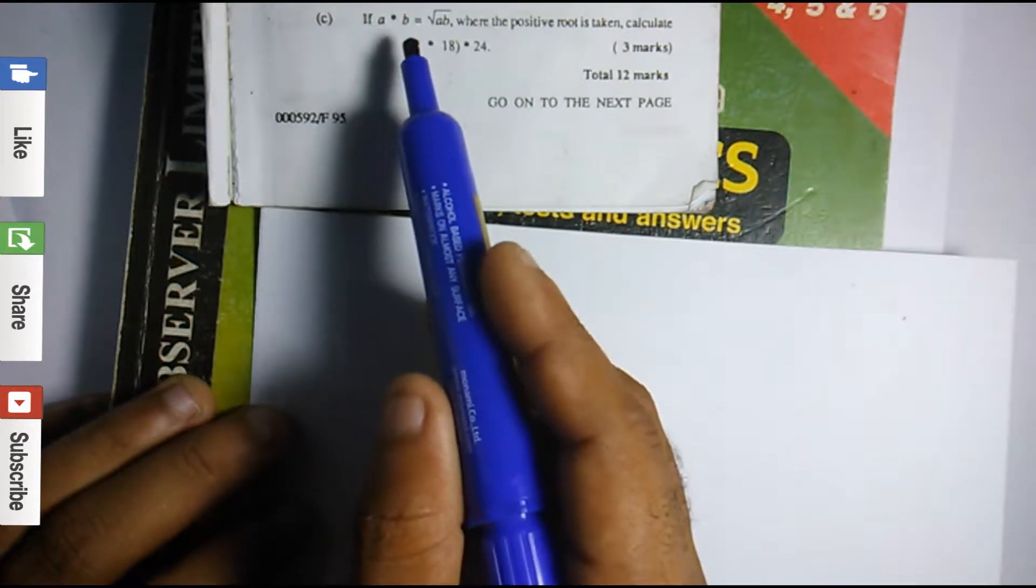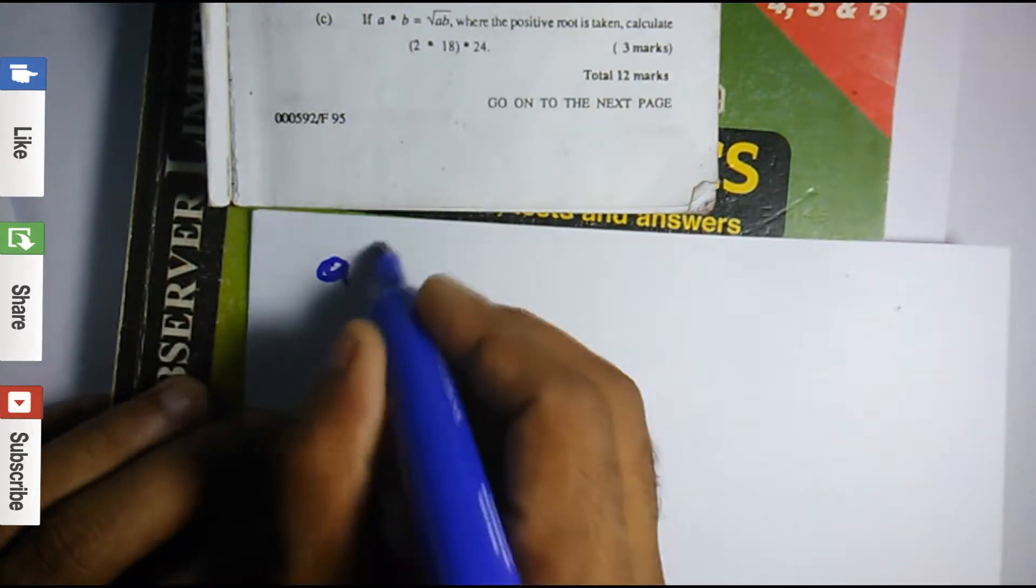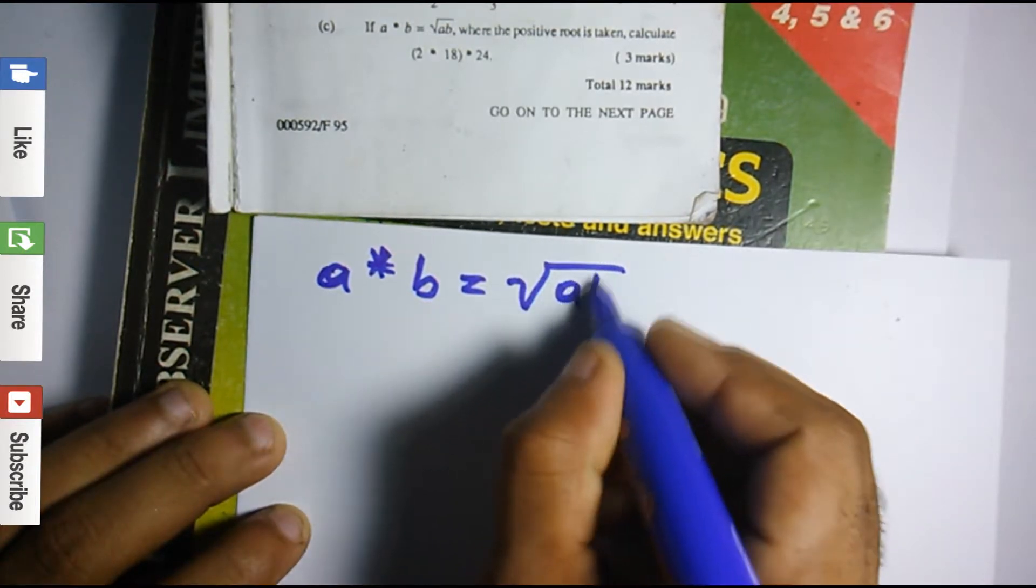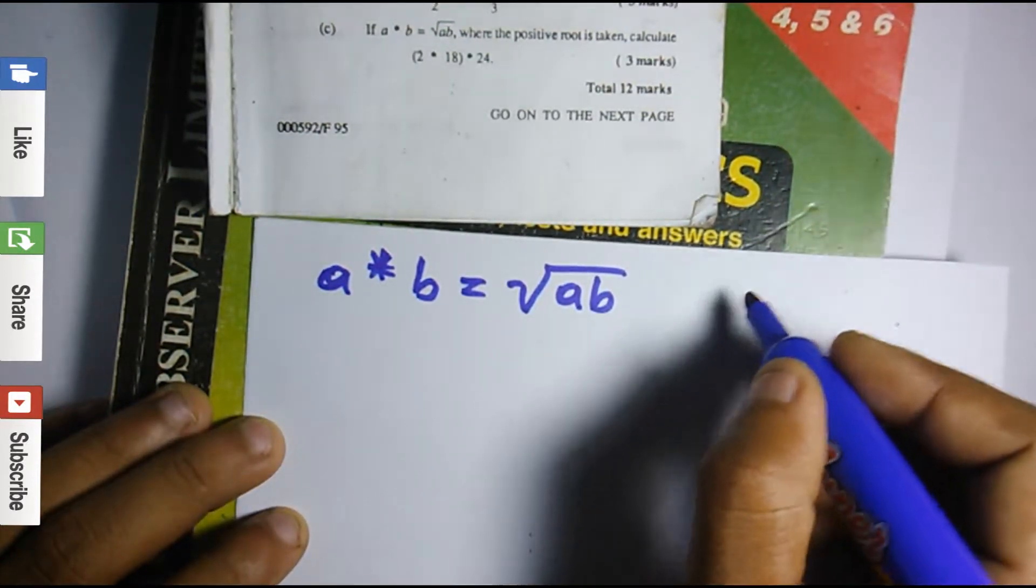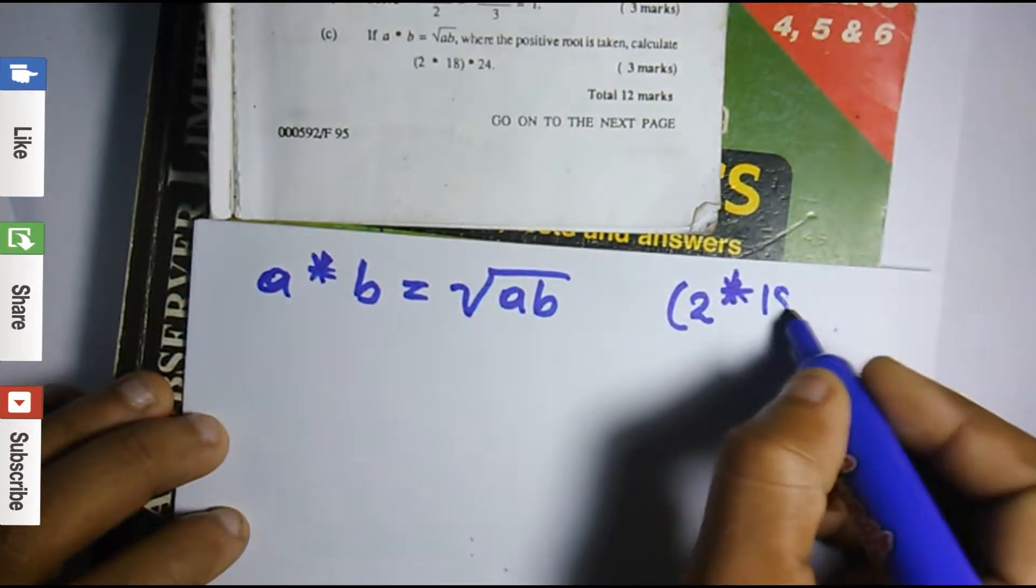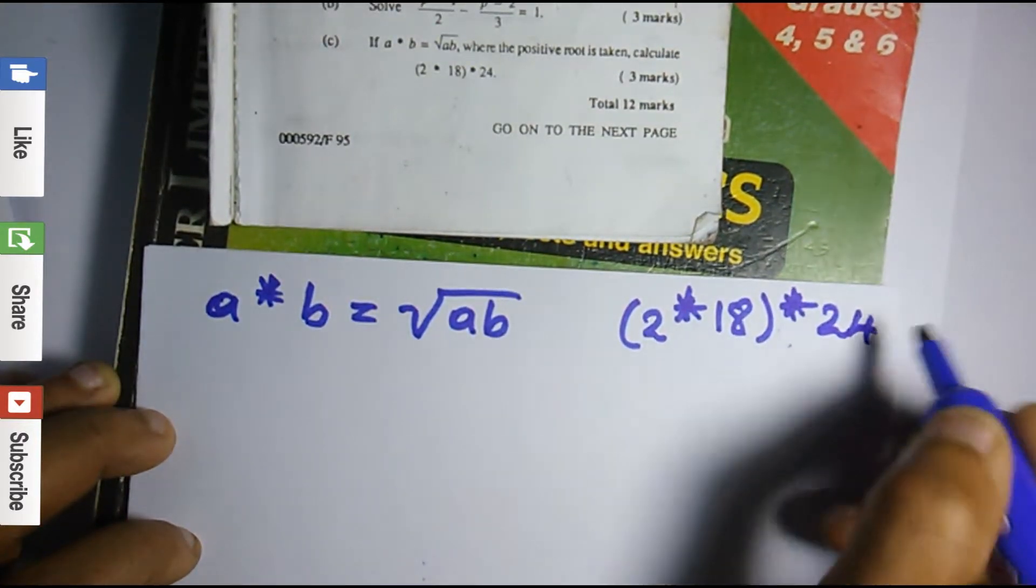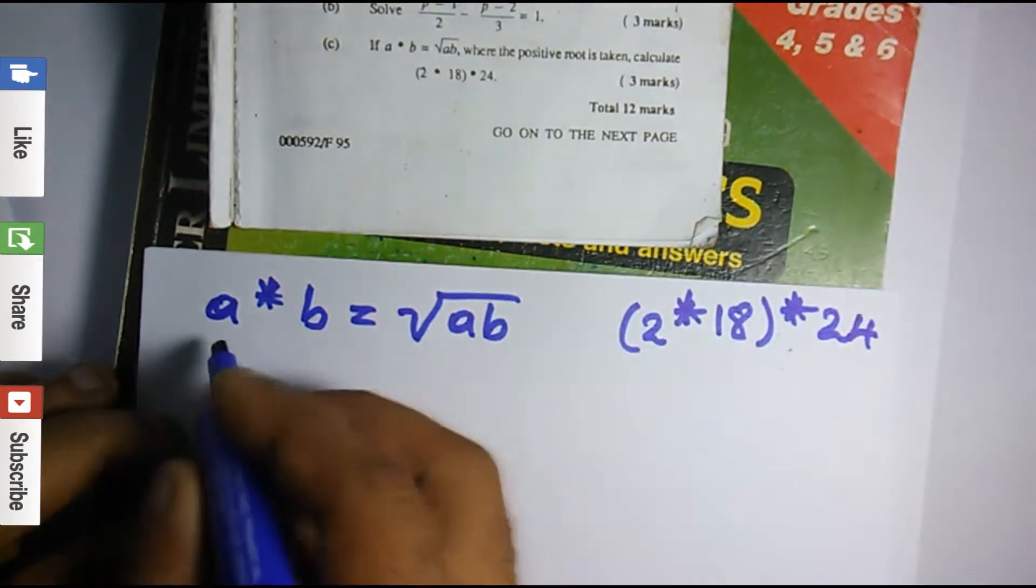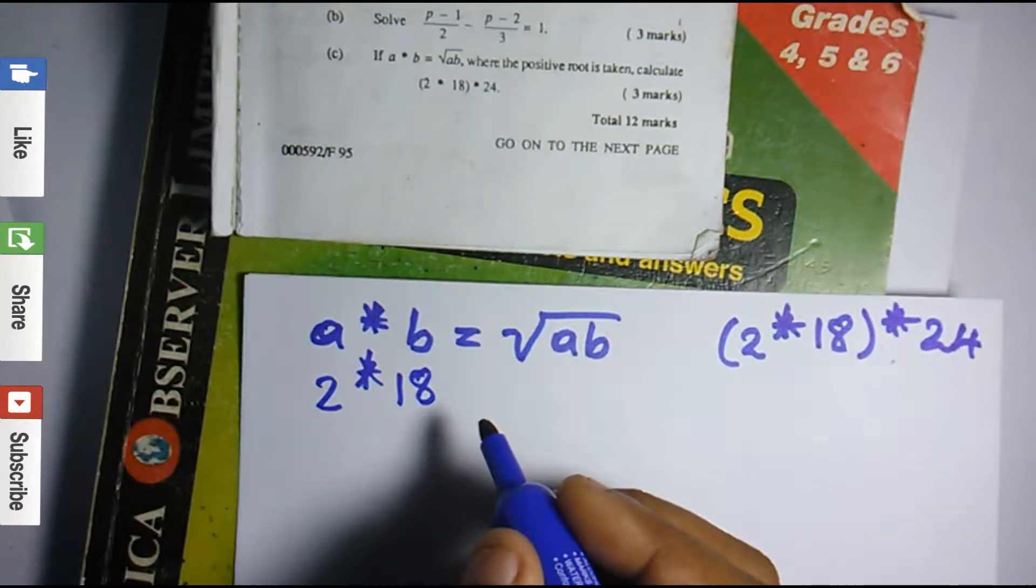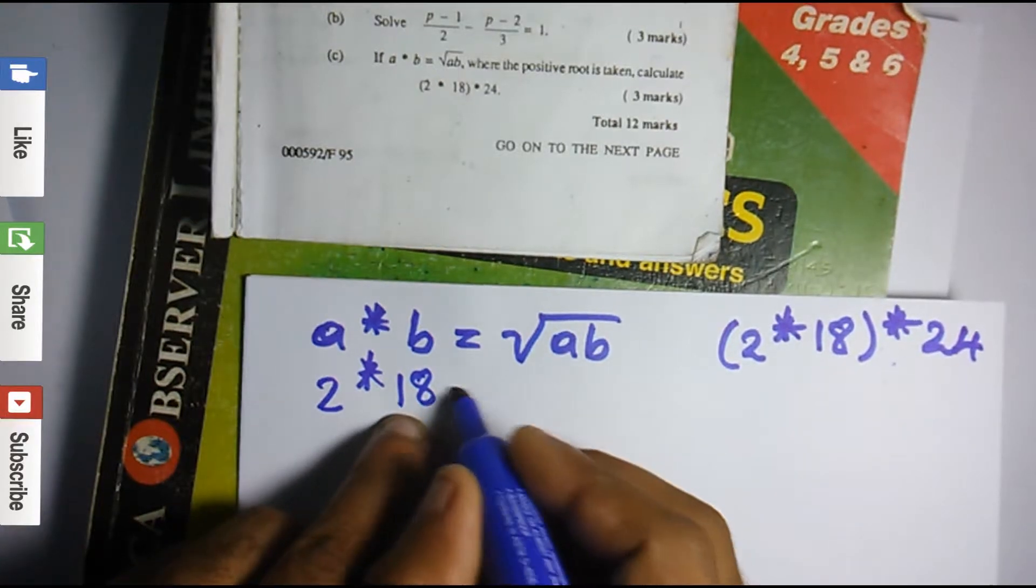We have a asterisk b equals the square root of ab. Now the question was bracket 2 asterisk 18 close bracket asterisk 24. So remember what are we going to do first? The bracket. The bracket is 2 asterisk 18, so a is 2 and b is 18.